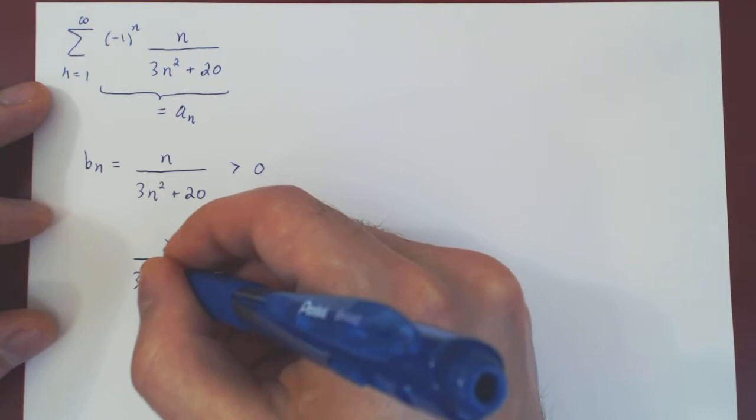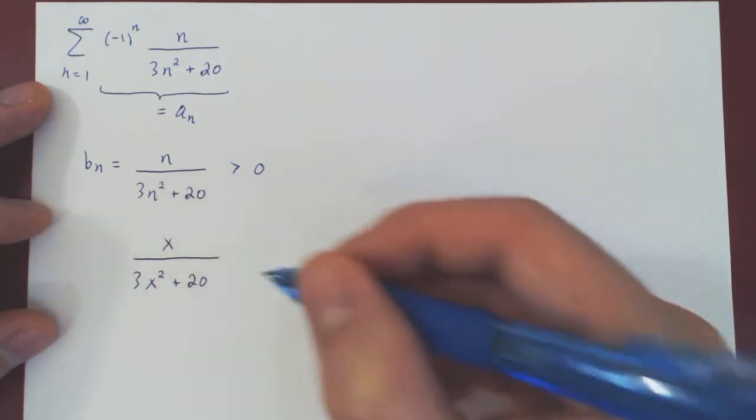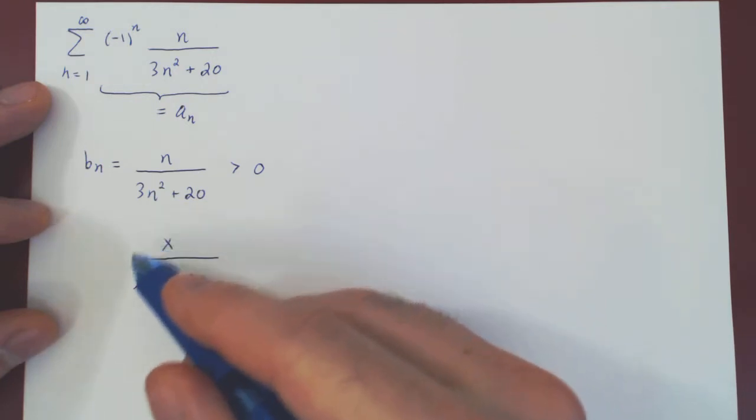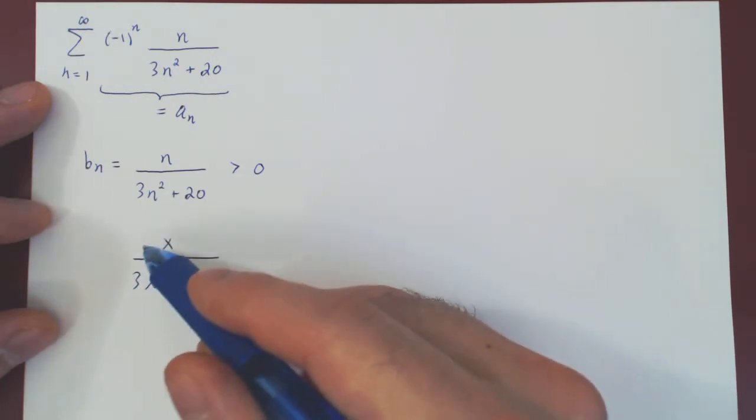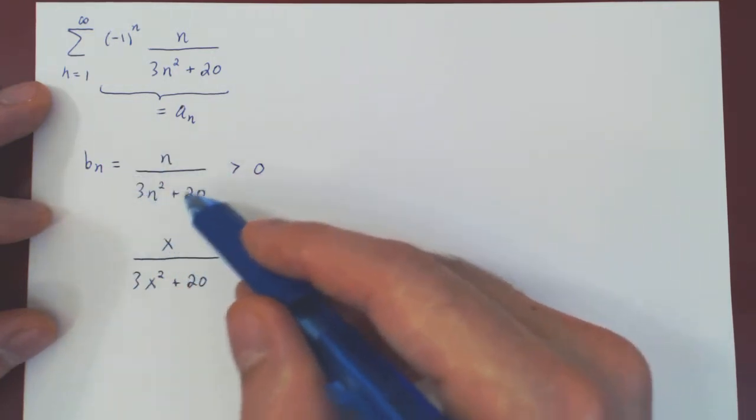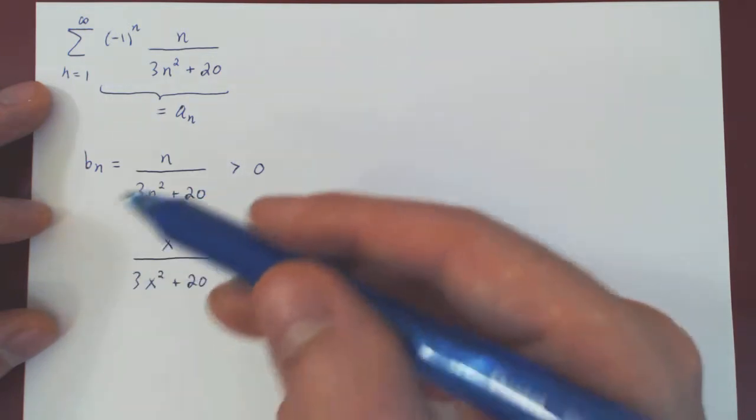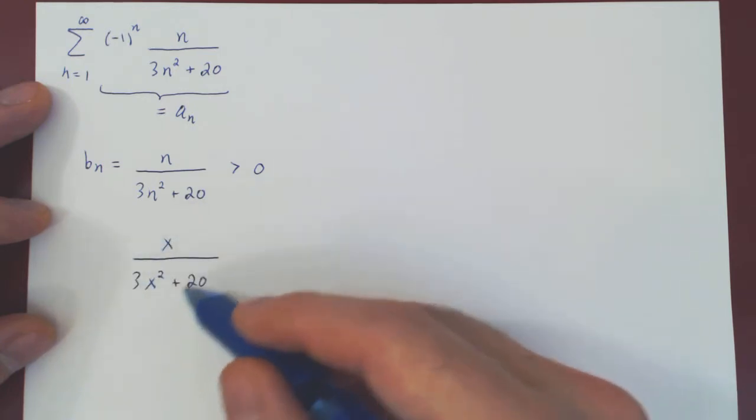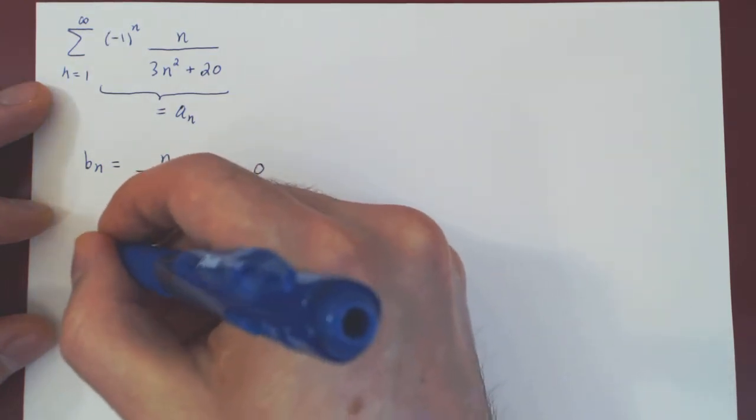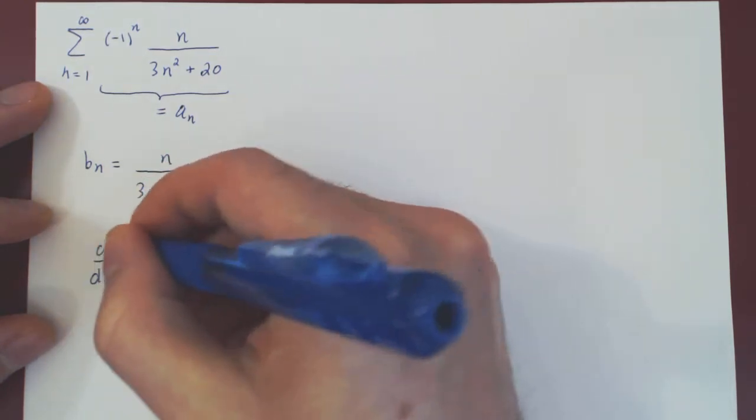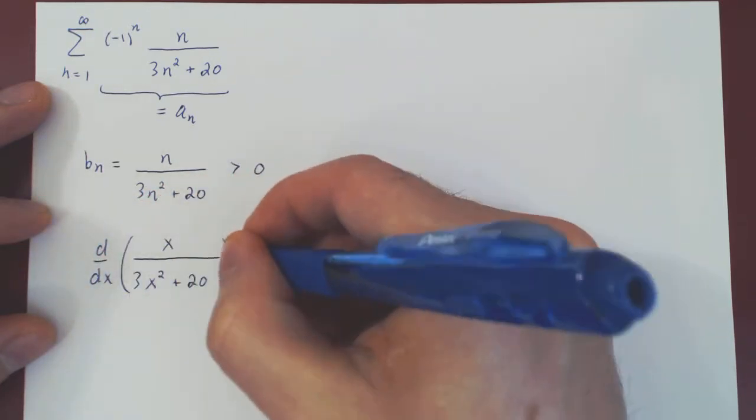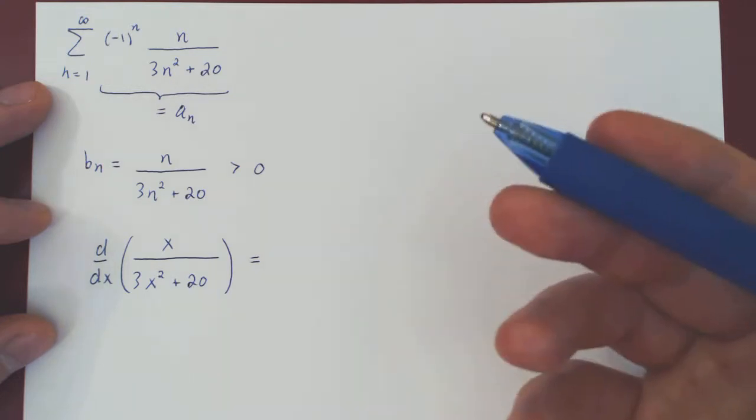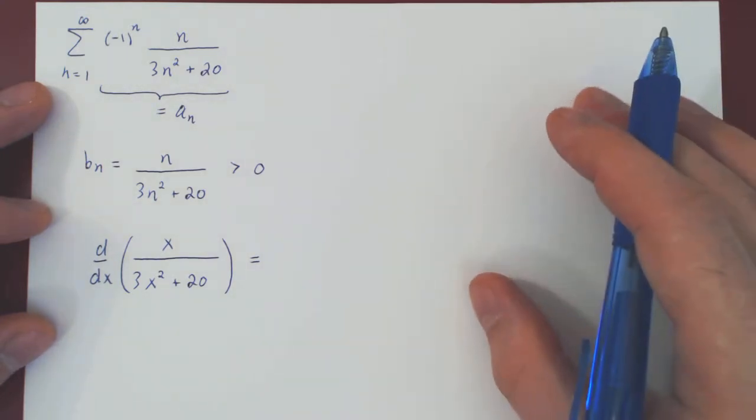So x over 3x squared plus 20. And if we can show that this function is eventually decreasing, then the discrete sequence will also be eventually decreasing. And the easiest way to show that a function is eventually decreasing is to show that when x is large enough, the derivative of the function is negative, as the derivative is the rate of change of the function.